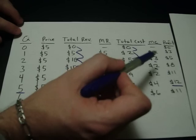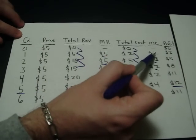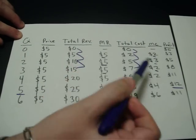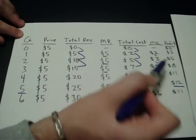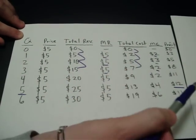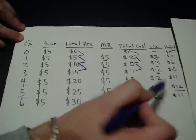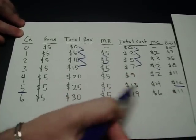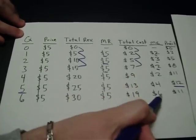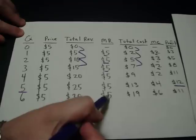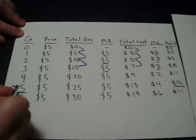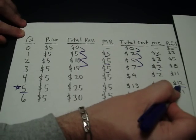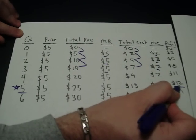Look at the numbers. Would we spend two additional dollars to make five additional dollars? Yes. We would also spend three to make another five. We'd spend another two dollars to make another five, and two dollars to make another five, and four dollars to make another five. But nobody would spend six dollars just to make another five dollars. So we produce up to five units, where our profits are maximized at twelve dollars.